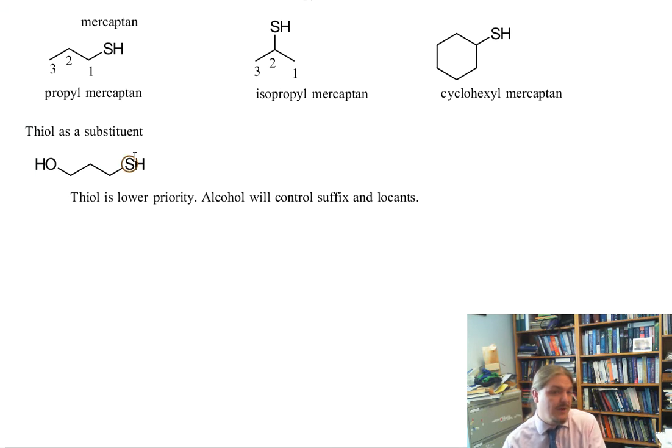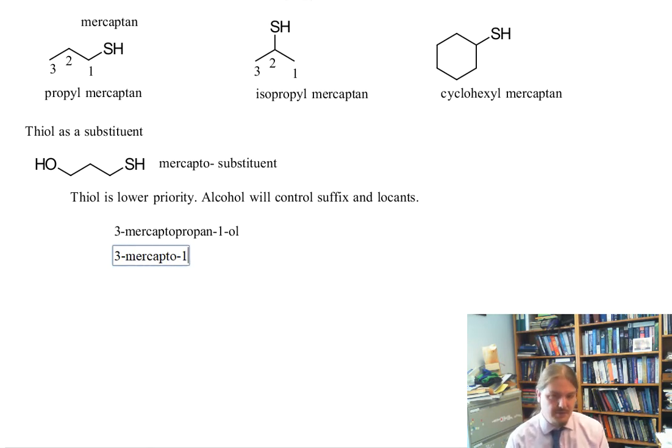The alcohol is going to control the suffix and the locants in terms of how we're going to number this compound. The alcohol is going to be at carbon-1, the thiol is going to be at carbon-3, and this is going to be some kind of substituted propanol, 1-propanol, because we have the alcohol at carbon-1. This thiol is the mercapto substituent. So this is 3-mercaptopropan-1-ol, or perfectly fine to say 3-mercaptopropanol.